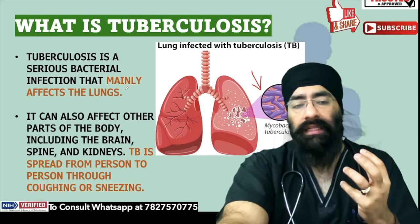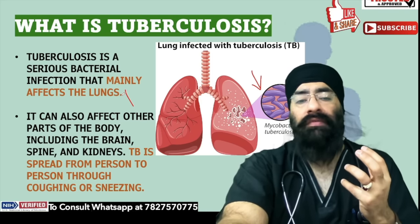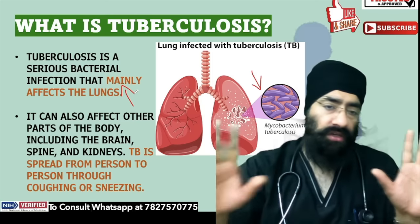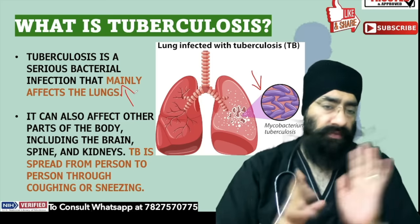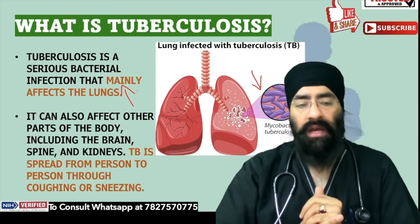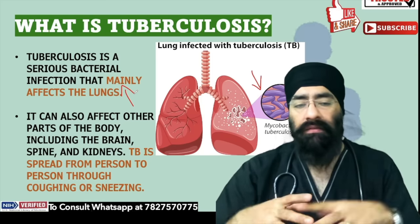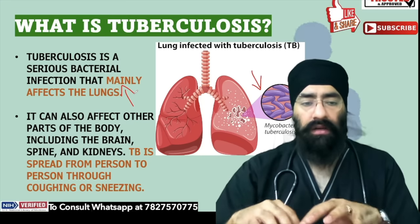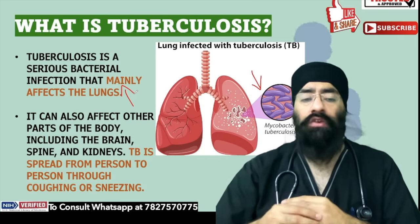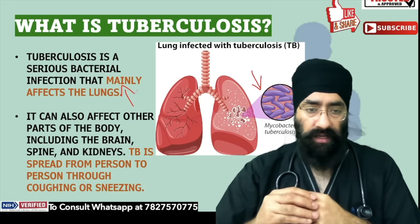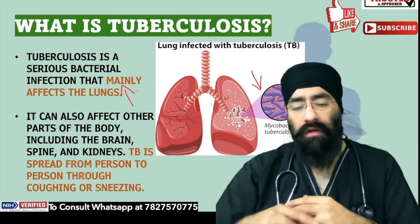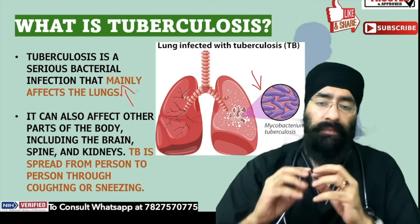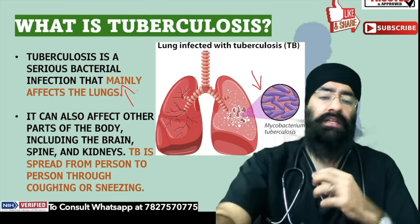TB ek bacteria ka naam hota hai aur yeh zyada tar aapke lungs — faefdon — mein effect karta hai. Lekin yeh poori shareer mein kahi bhi effect kar sakta hai: brain, kidney, spine, spinal cord, haddiyaan — unko bhi effect kar sakta hai.